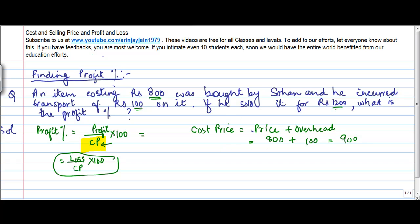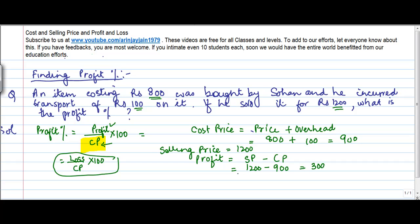He sold it for Rs. 1200, so the selling price is 1200. Profit is equal to selling price minus cost price, which is 1200 minus 900. So the profit is 300. Now I know the profit and I know the cost price.